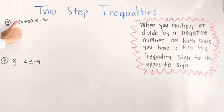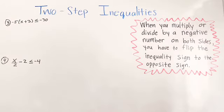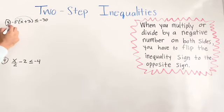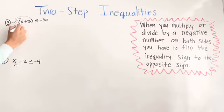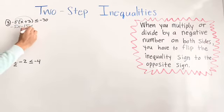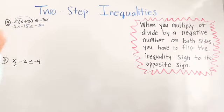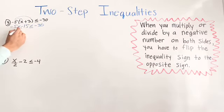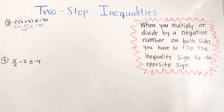For number 3, we have negative 5 times (x plus 3) is less than or equal to negative 3. We're going to first distribute, giving us negative 5x minus 15. Then we do the opposite of negative 15, which is positive 15, and add it to both sides. Whatever we do on one side, we do on the other.